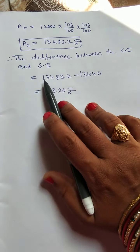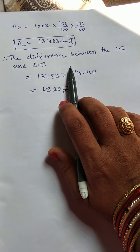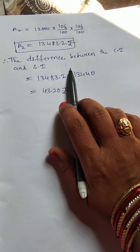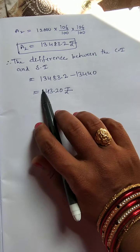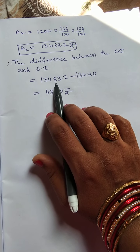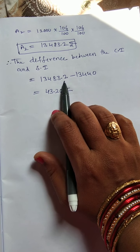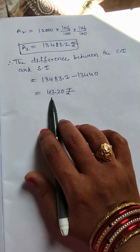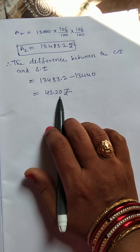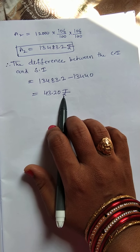Now, you can take the difference between the compound and the simple interest. This is the compound interest, A1 is the simple interest. Now, 13,483.2 minus 13,440. So, you will get 43.20 rupees if you subtract.